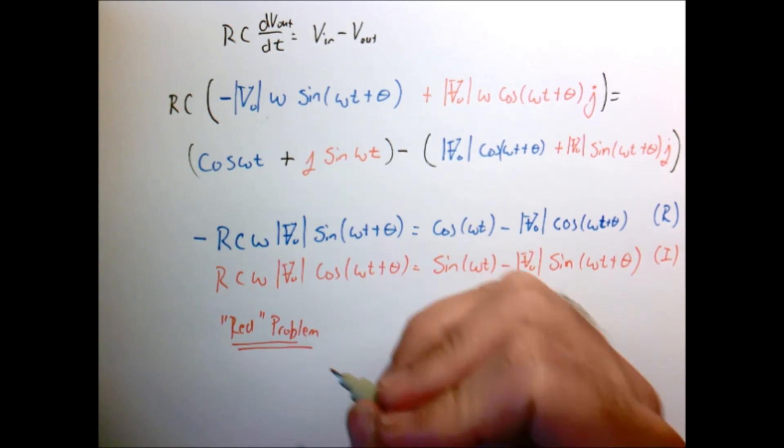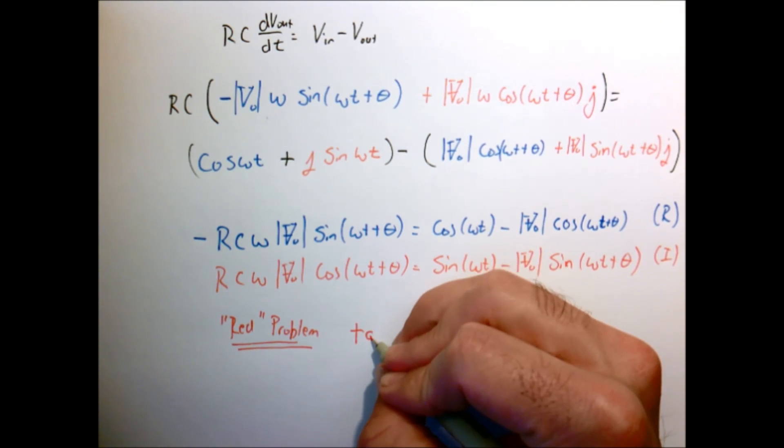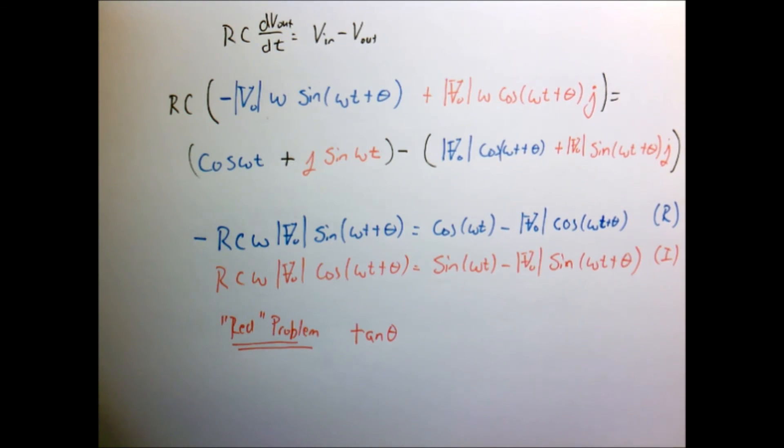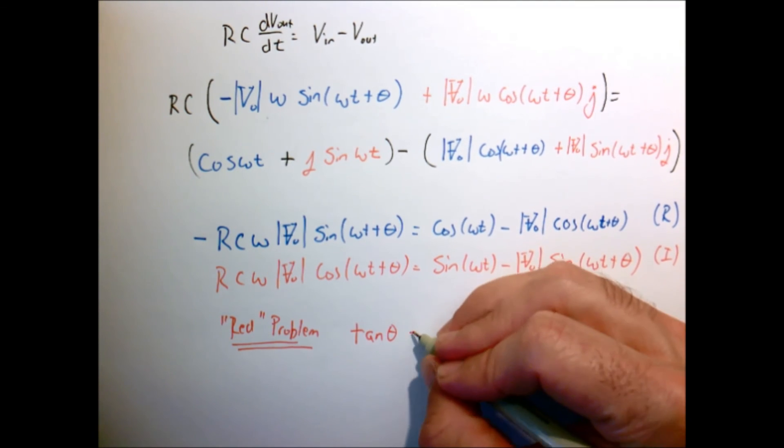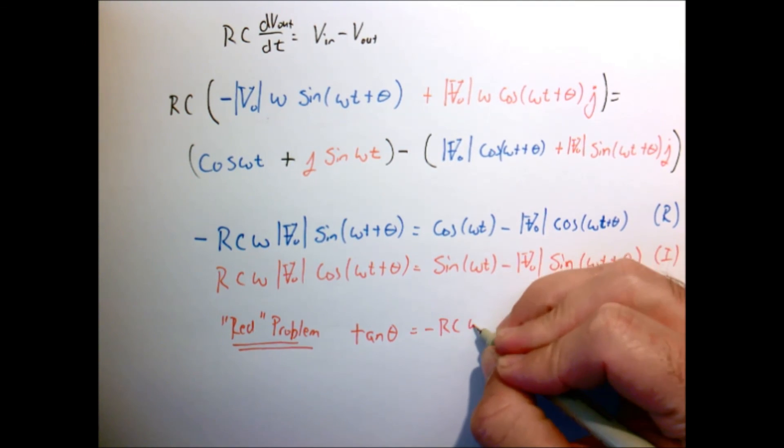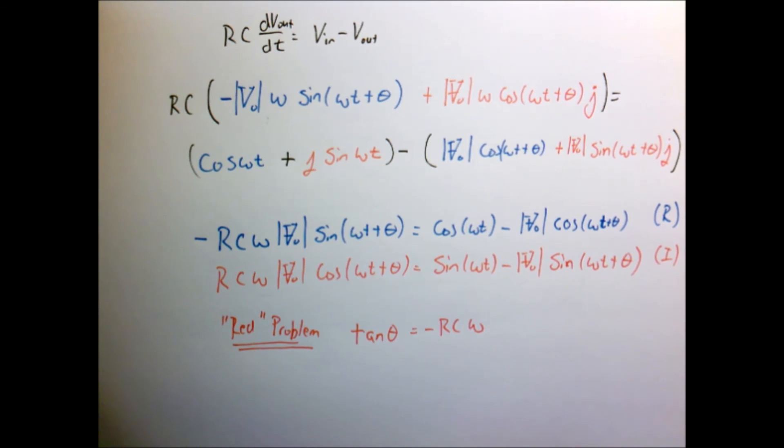And we solved the red problem only because we assumed our input signal was a sine. And when we solved the red problem, the answer that we got was that the angle, the tangent of theta, which is equal to minus rc omega.